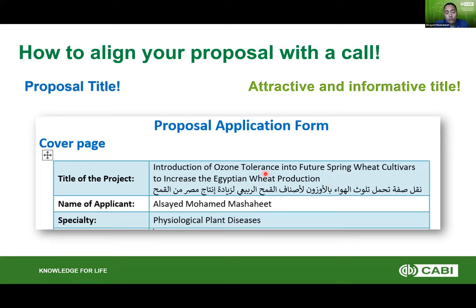Make sure you show novelty in the title — something like 'introduction of,' meaning something new that has not been here before. Put keywords that are hard to reject, like 'to increase Egyptian wheat production.' Egypt is the largest wheat importer worldwide, so a proposal aiming at increasing wheat production in Egypt appeals directly to the funding agency and the country. Make sure you appeal to your environment with your title.